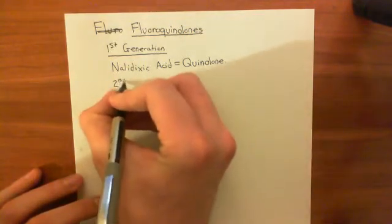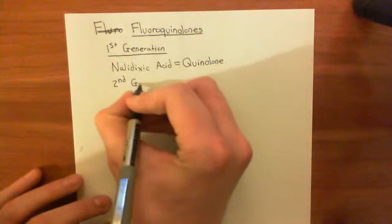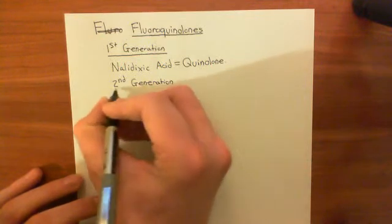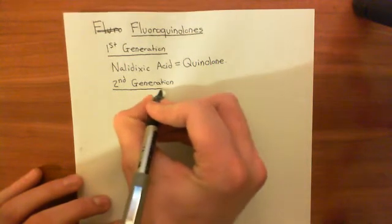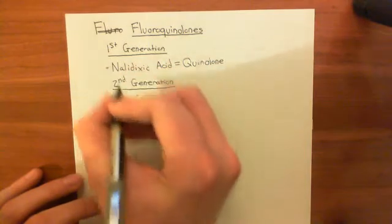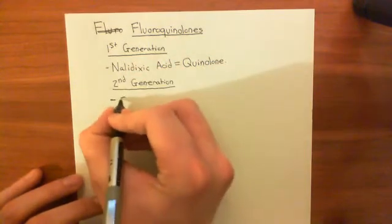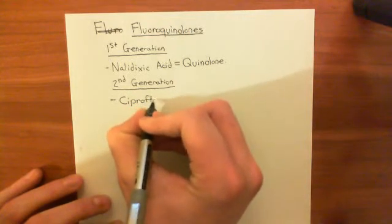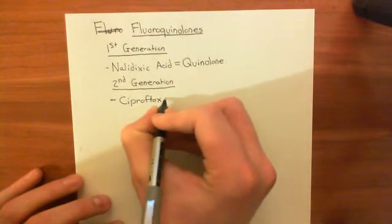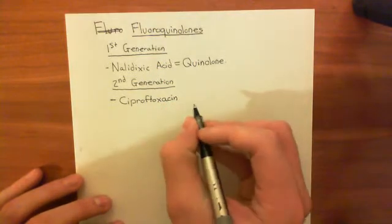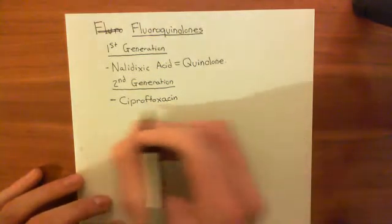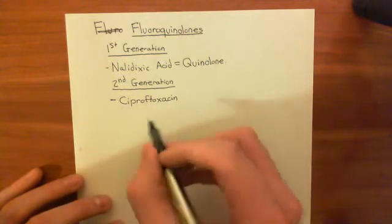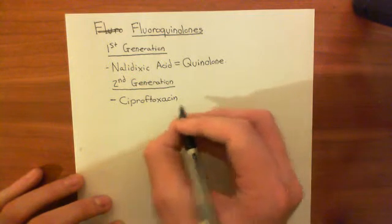Second generation fluoroquinolones are important — you will see these prescribed many, many times. The archetypal fluoroquinolone is ciprofloxacin, commonly known as Cipro. This is a drug commonly prescribed for urinary tract infections, typically for about a month.